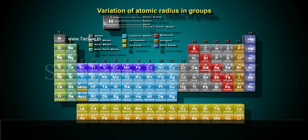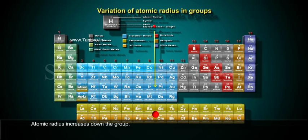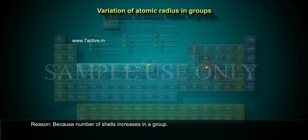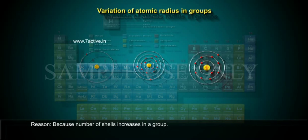Variation of atomic radius in groups: Atomic radius increases down the group because the number of shells increases in a group.